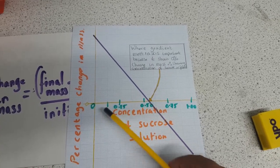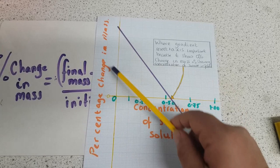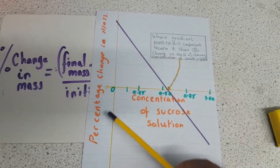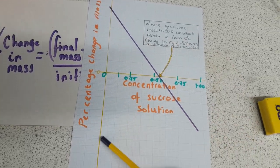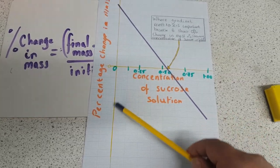So that's why that is important. Now your percentage change in mass will have positive values because it increases at some point, and negative values. That's why the zero point is in the middle, because you'll have some positive percentage change and some negative percentage change, indicating that the potato got bigger or the potato got smaller.